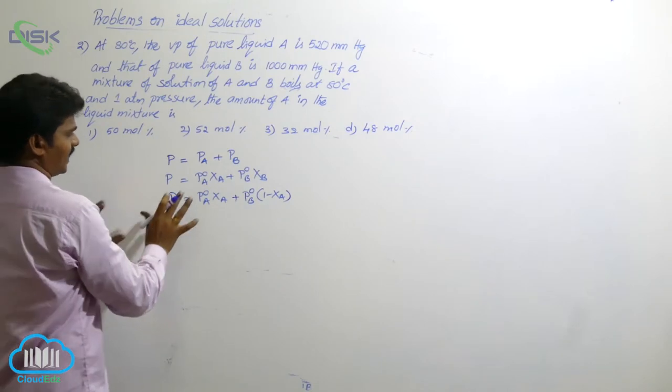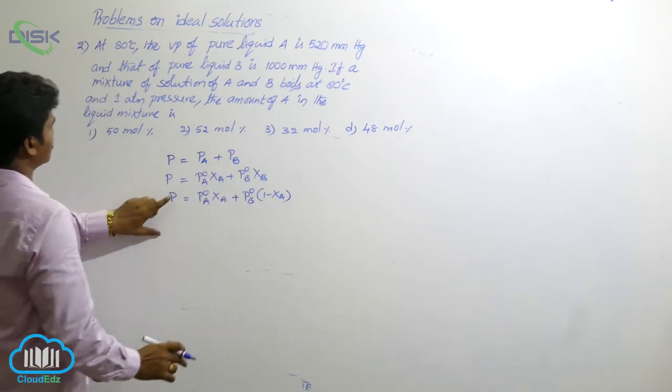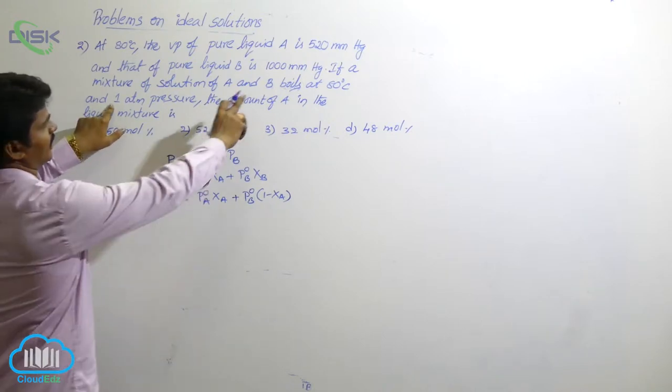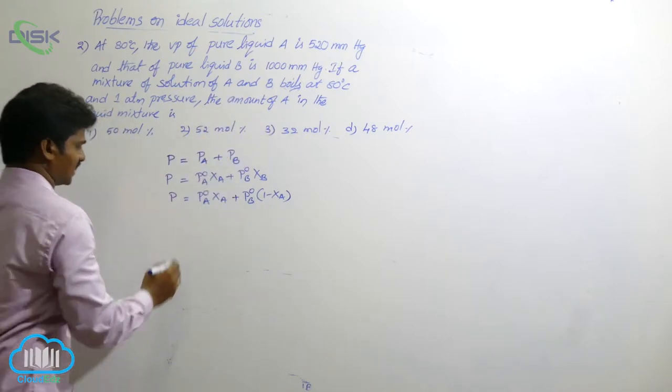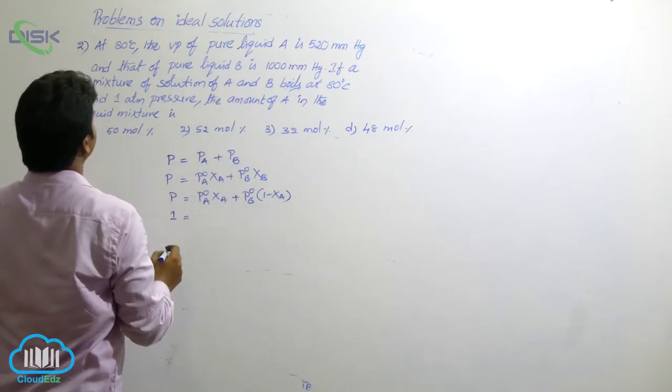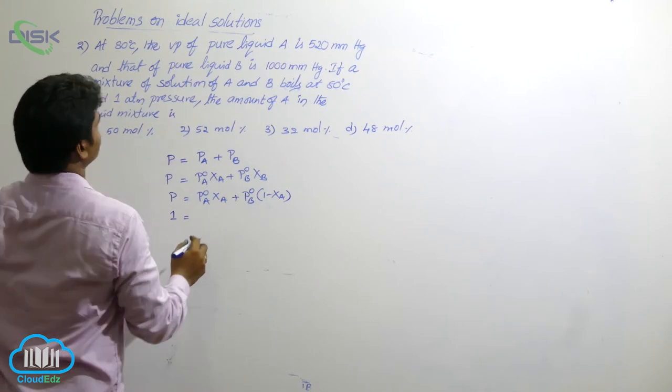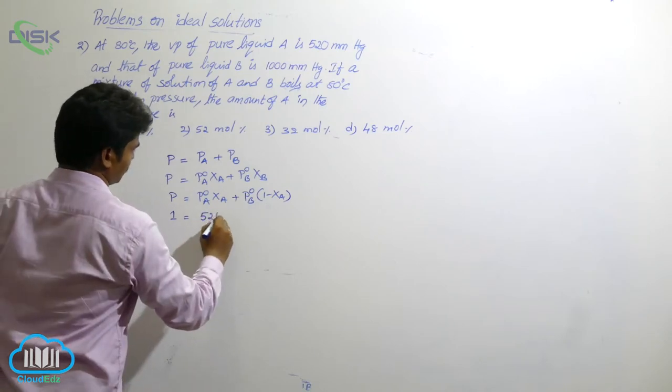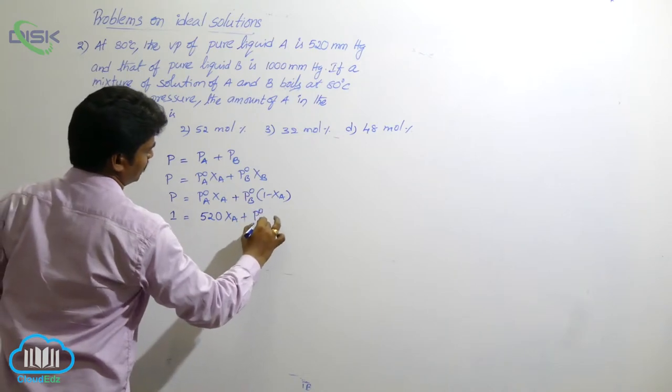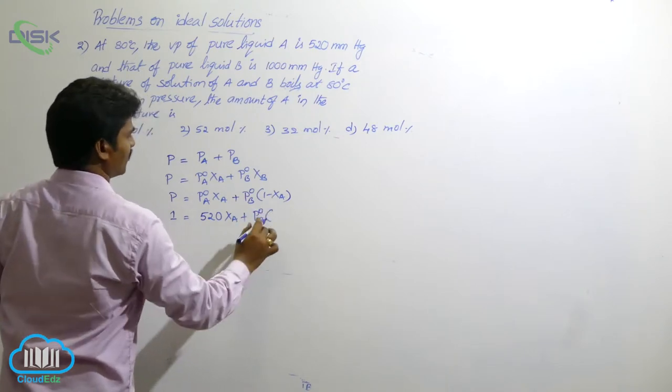This side, total pressure. Now, substitute all the values. What is p? Here, p is given. See here, the mixture is at 1 atmosphere pressure. That means total pressure is 1 atm. Now p0A is given as 520. So, 520 times xA plus p0B times 1 minus xA.